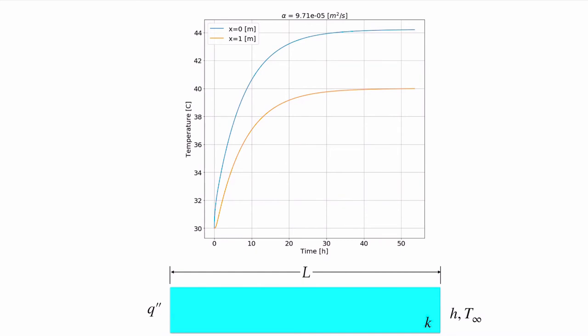Looking at the time variation, as soon as we apply heat flux the temperature at the start of the bar rises to produce the temperature gradient required for 100 watts to enter — the heat flux equals minus conductivity times that slope. It takes a while for energy to propagate before the temperature at the far end begins to rise. Eventually both temperatures reach their steady-state values and no longer change.